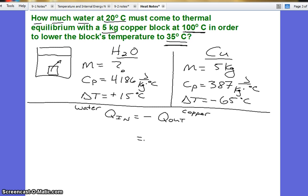Now for each object, we're going to replace it with MC delta T. And that's why we are writing our givens as such.